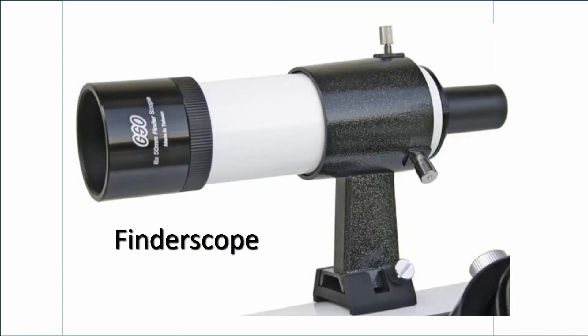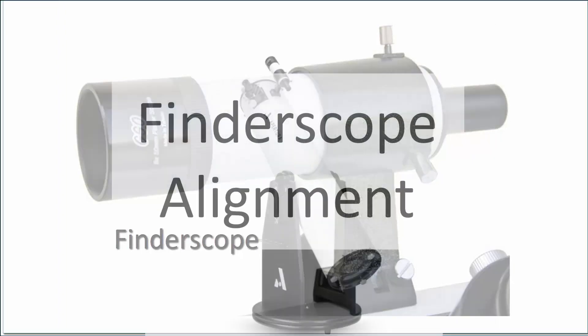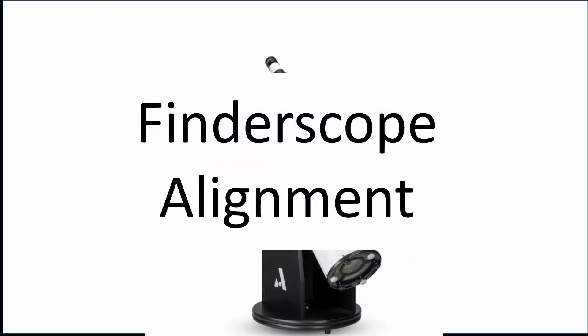When it comes to actually finding an object in the sky to look at, the finder scope is the most important component of the entire telescope. If the finder scope is not set up properly, you will suffer nothing but frustration and find nothing to look at.